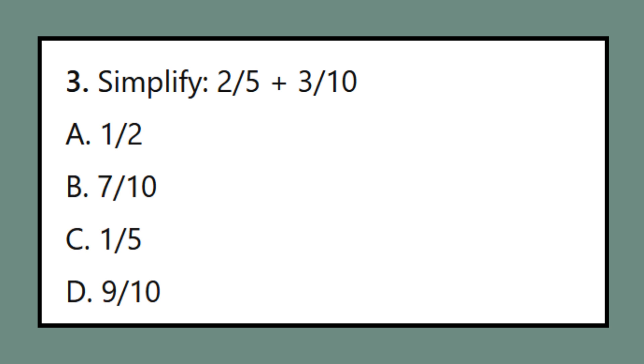Question 3: Simplify 2 fifths plus 3 tenths. A. 1 of 2, B. 7 out of 10, C. 1 of 5, D. 9 out of 10.